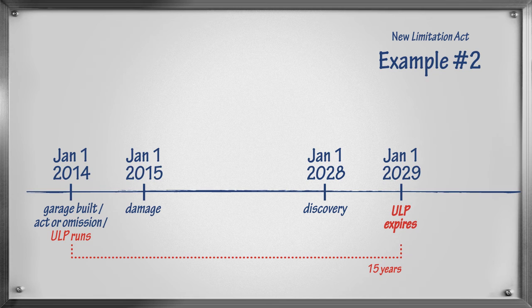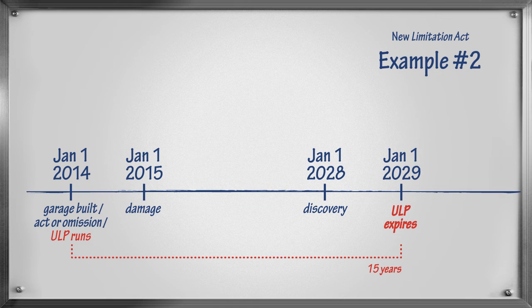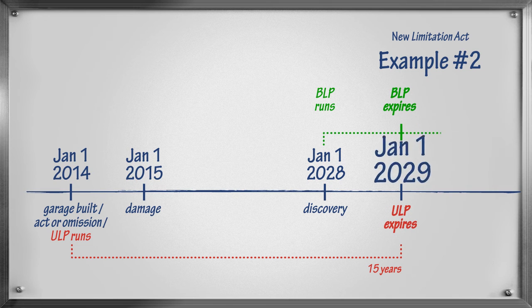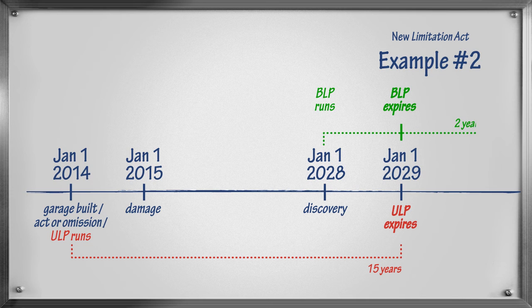Let's assume that the damage occurs on January 1, 2015, when the garage floor starts to crack and the sinking begins. However, because Mary does not discover the damage until January 1, 2028, the Basic Limitation Period does not begin until this time. Remember, the Basic Limitation Period begins upon discovery. The Basic Limitation Period will only run for one year in this example, since the Ultimate Limitation Period expires on January 1, 2029. This means that Mary has until January 1, 2029 to start her legal claim to sue the contractor.